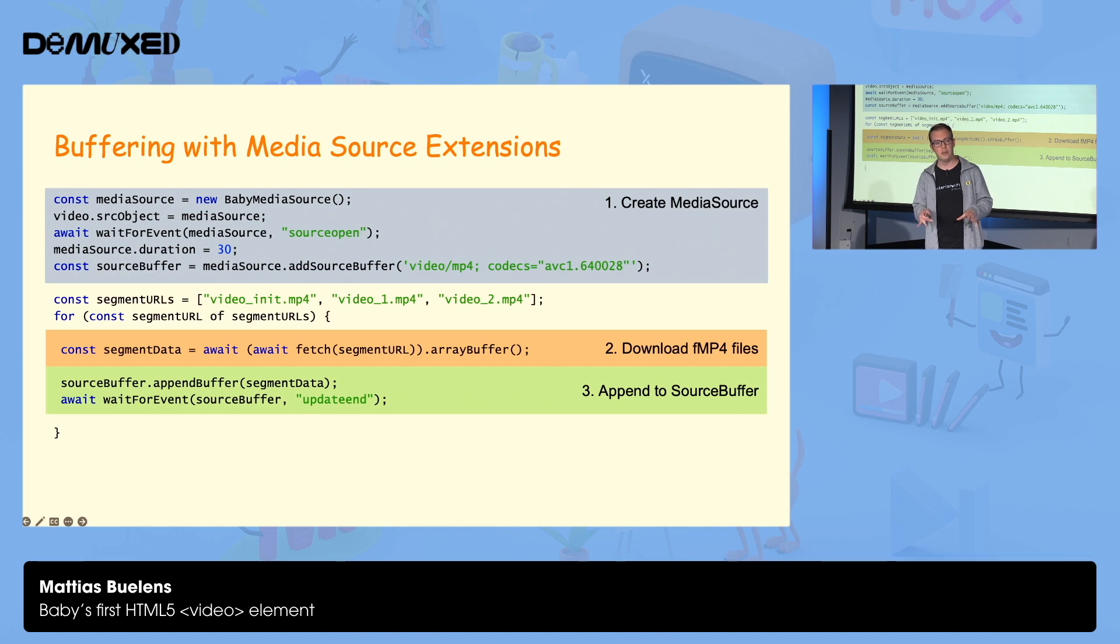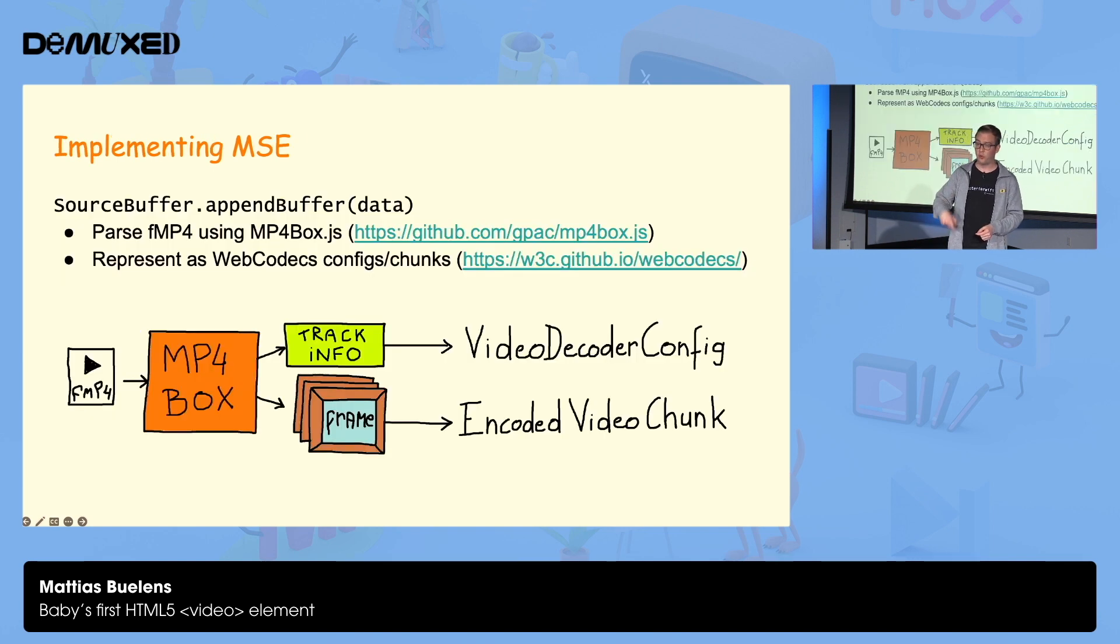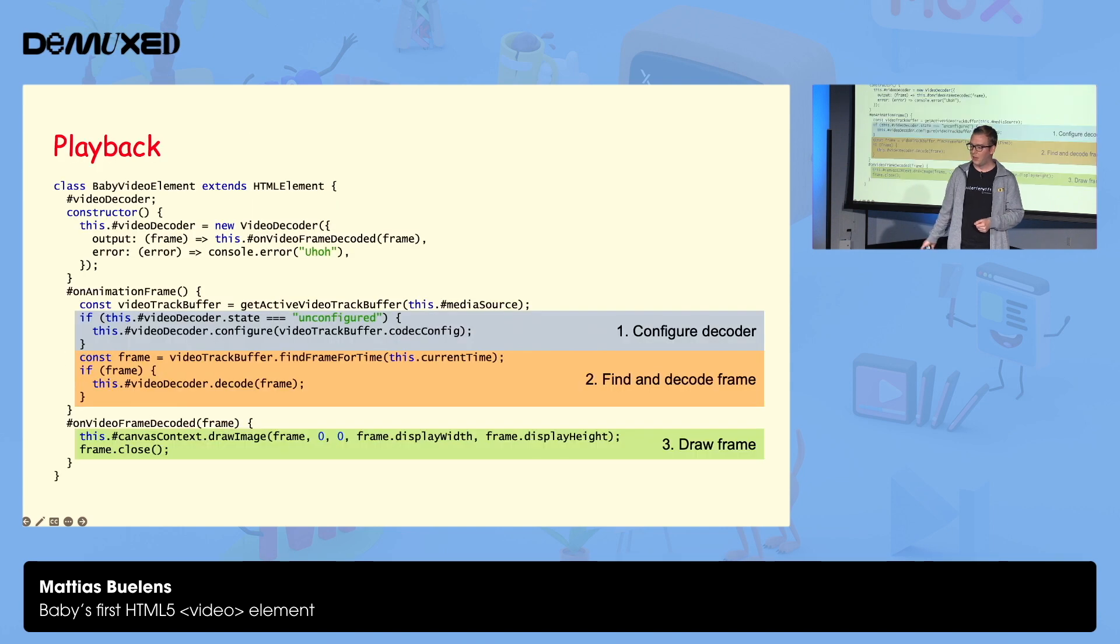We want to first put some data in our video element. The API for that is called Media Source Extensions. That again powers every JavaScript player out there. And logic is always the same. You create a media source with one or more source buffers. You download some fragmented MP4 files that you got out of an HLS, or a DASH, or an HSP manifest. And then you append those to your source buffer. And that gets you data for your video. Of course, we're implementing this ourselves today. So the most important method is append buffer. We'll use mp4box.js to parse the incoming fragmented MP4 files. The initialization segment contains the movie box that contains track and codec information, and we'll represent those as a video decoder config. The media segments then contain our movie fragment boxes with media sample data, and we'll represent those as encoded video chunks later to play with web codecs.